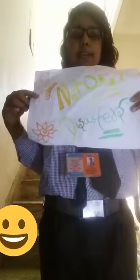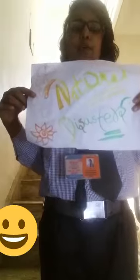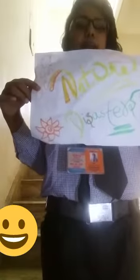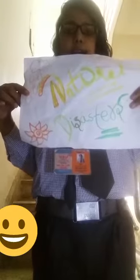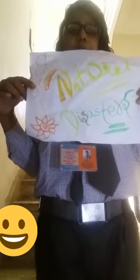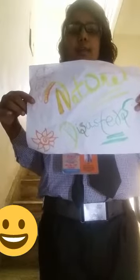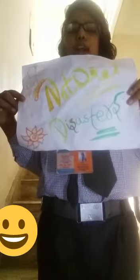Natural disasters are events caused by forces of nature that often affect human life and the environment. They can happen at any time or place without a warning. Movements within the earth are responsible for causing them. Earthquakes, floods, tsunamis, volcanoes, and droughts are some natural disasters.